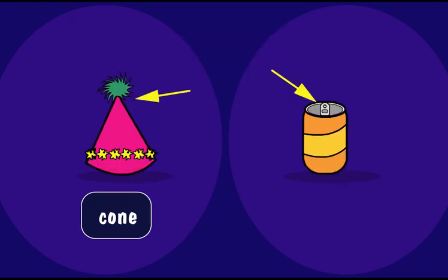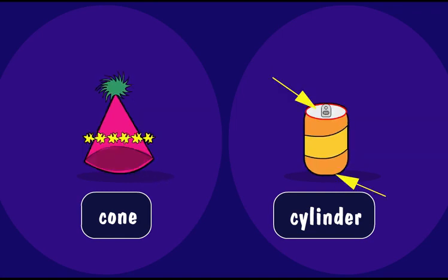This hat has a cone shape, and this can has a cylinder shape. They have faces shaped like circles. The can has two faces shaped like circles. The hat only has one. The cone is pointed on the other end. You are good at describing solids.